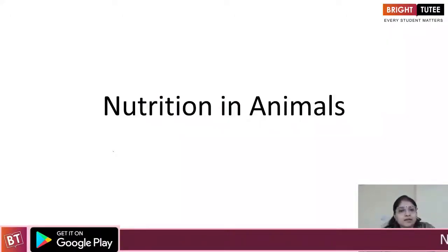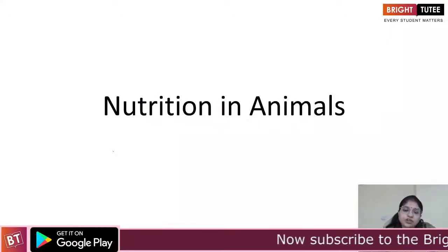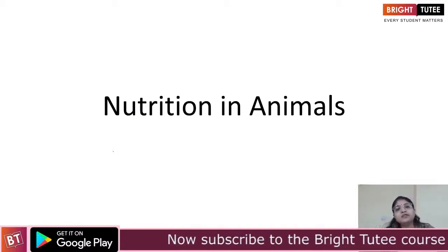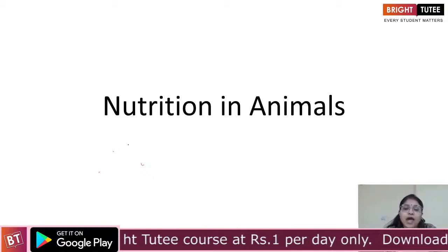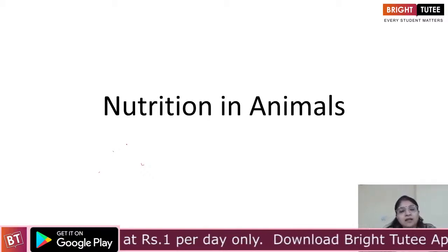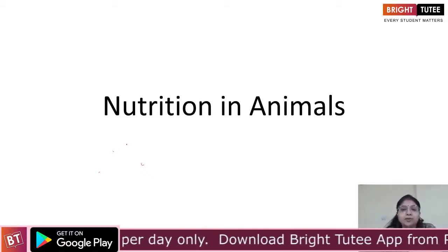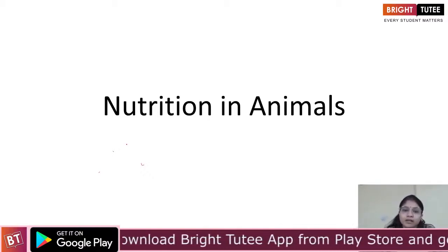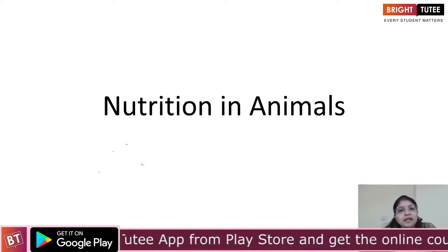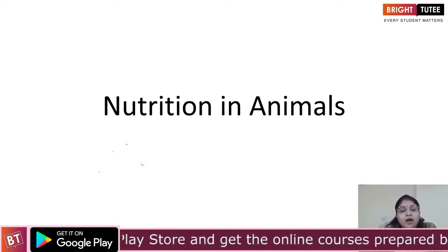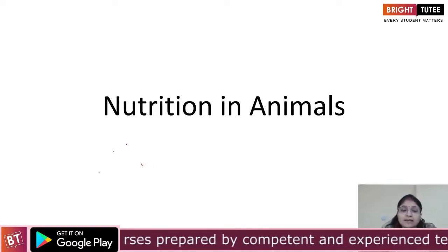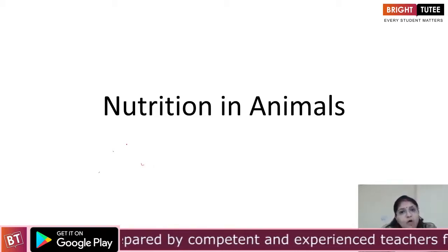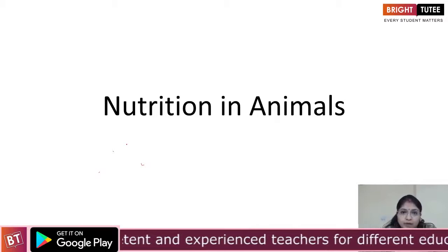Welcome to the session. In this session, we are going to start with the chapter Nutrition in Animals. In the previous chapter, we talked about how plants obtain their nutrition and we saw that green plants specifically are autotrophic in nature — that means they can prepare their own food. But animals are dependent on plants, either directly or indirectly, to obtain their food.